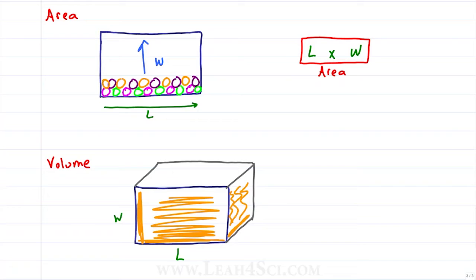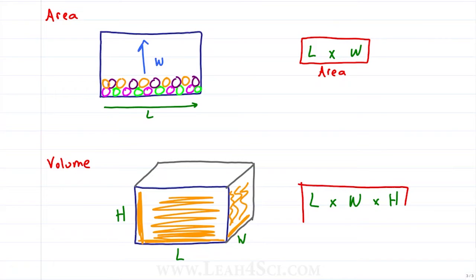The letters you may have memorized are slightly different: what we called depth is sometimes called width, and what we called width is now called height. Between you and me, call them A, B, C or side 1, 2, 3 — it doesn't matter. But if you have to use the standard equation, the volume of a rectangular solid is length times width times height.